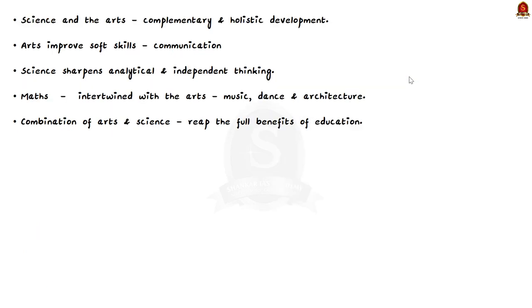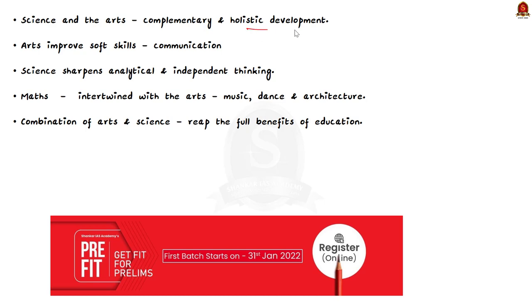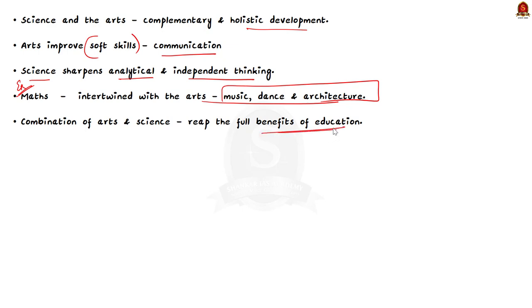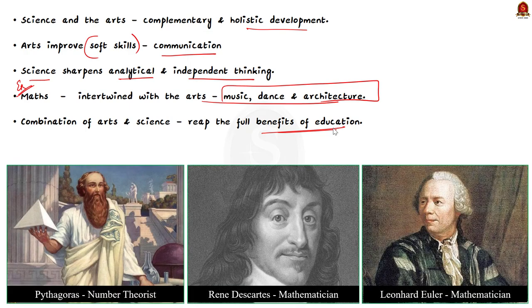For example, science and the arts are complementary and necessary for holistic development. While the arts improve skills like communication, science sharpens analytical and independent thinking. Even maths is seen to be intertwined with arts such as music, dance and architecture. When all these combine, the person could reap the full benefits of education. Let me give you a few persons who stood as successful examples of multi-dimensional education: Pythagoras who was a geometer, number theorist and musicologist; Rene Descartes and Euler who were great mathematicians and also music theorists; Einstein who was an accomplished pianist and violinist; and even mathematician Manjul Bhargava plays the tabla. It is clear that blended learning of science and art subjects is beneficial.